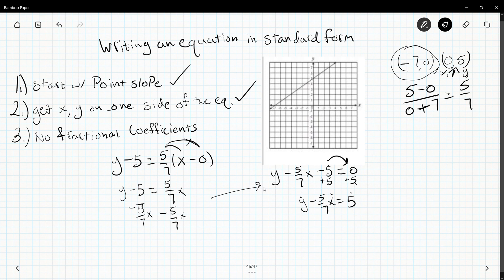That means I need to multiply everything by 7 to get rid of the denominator. Distribute 7 to each term: 7 times y is 7y, 7 times negative 5/7 is negative 5x, and 7 times 5 is 35.